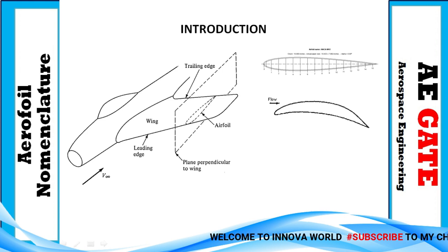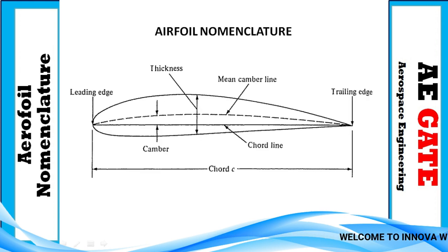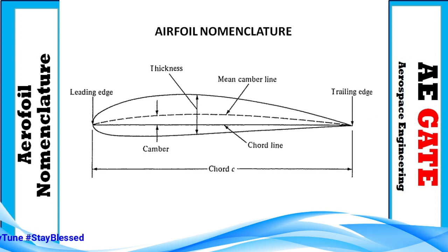Here are a few nomenclature terms: leading edge, trailing edge, camber, chord line, camber line, and thickness. The leading edge is the front of the airfoil, having maximum curvature but minimum radius. The trailing edge is the rear of the airfoil, where we have maximum curvature at the rear.